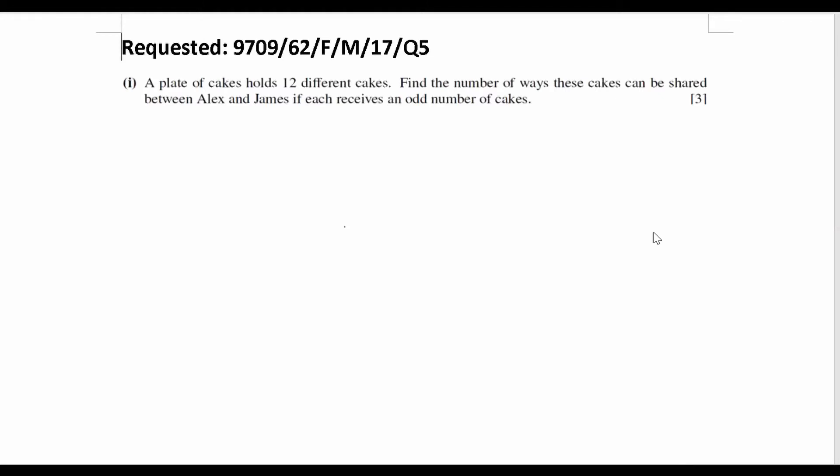Hi, this is the requested video from February-March 2017, Variant 62, Question 5. Okay, the part one. A plate of cakes holds 12 different cakes. Find the number of ways these cakes can be shared between Alex and James if each receives an odd number of cakes.